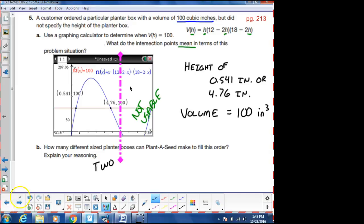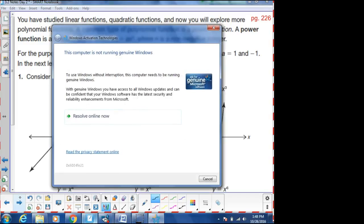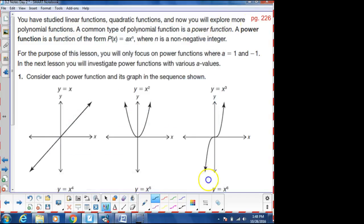All right, so moving on now, then, to today's lesson. We've studied linear functions. We've studied quadratic functions. That was chapter 1 and chapter 2. And now we will explore more polynomial functions. A common type of polynomial function is called a power function. By the way, for those of you following along, the page number is always going to be up here on these screencasts so that you know where we are as we go along. So a power function is of the form p of x equals a times x to the n power, where n is a non-negative integer. So n is going to be positive, is what we're talking about there.